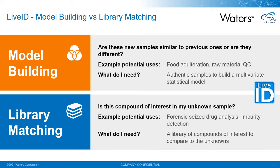Library matching, on the other hand, asks whether any of the compounds in your library are contained in your unknown sample. That type of approach is useful for applications such as quickly triaging seized drugs for forensic analysis. We have a standard library of 50 of the most common drugs of abuse for Radian ASAP, which is freely available for download from our website.